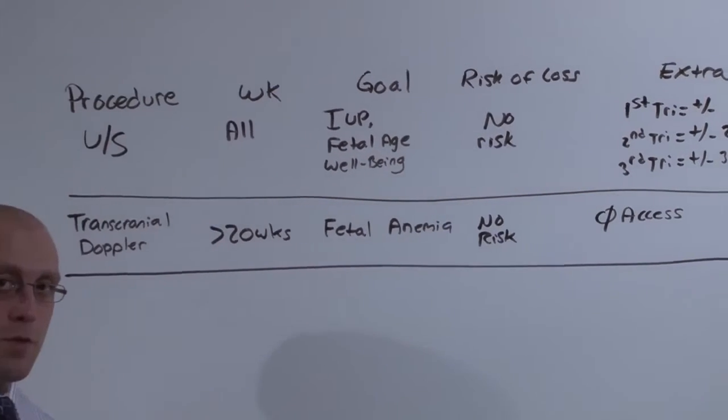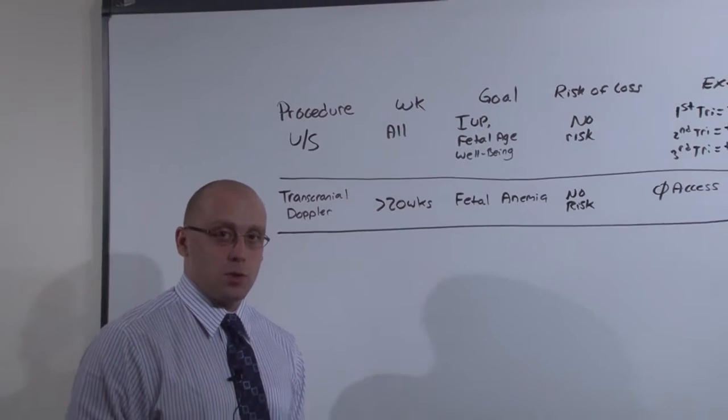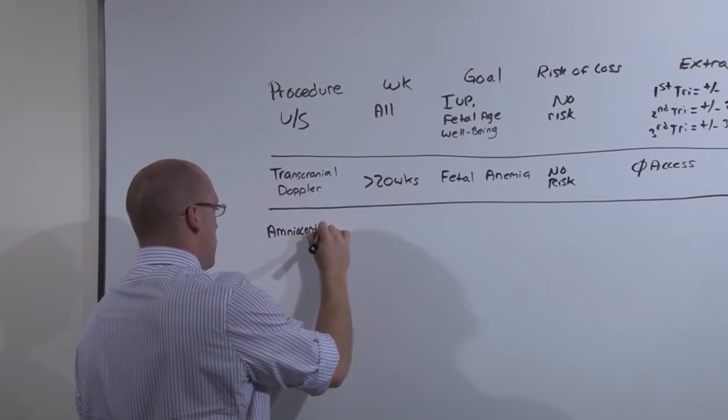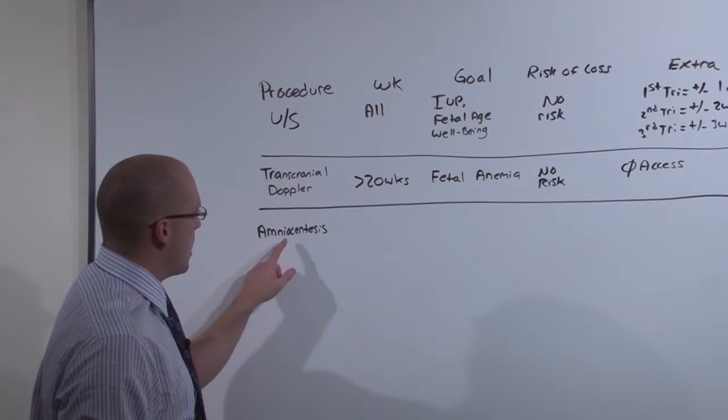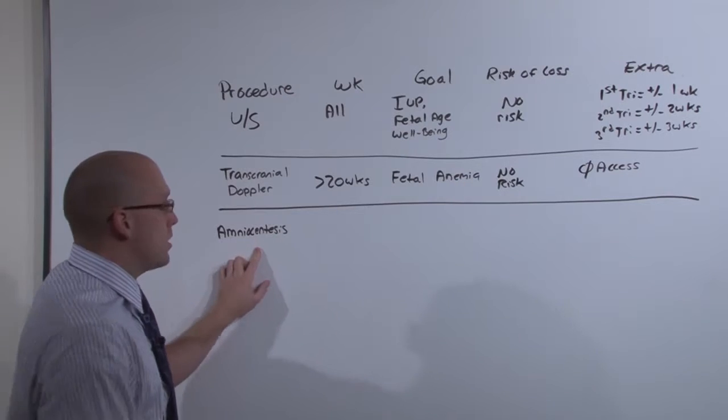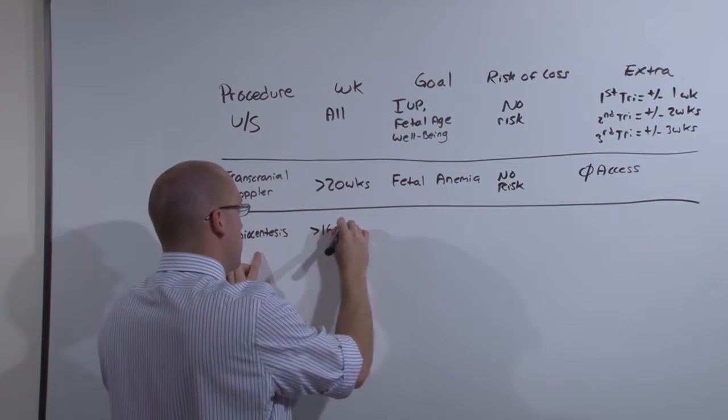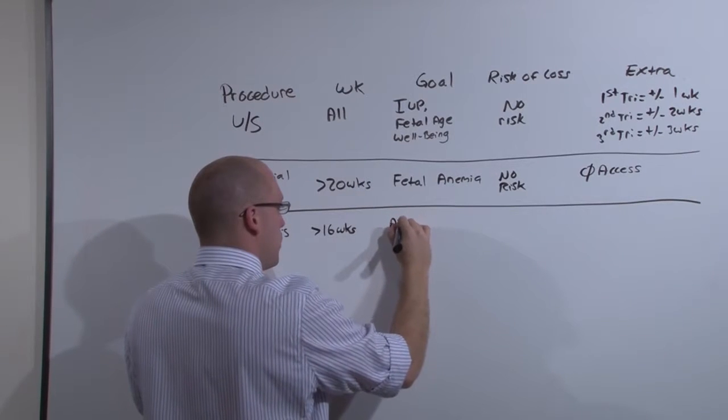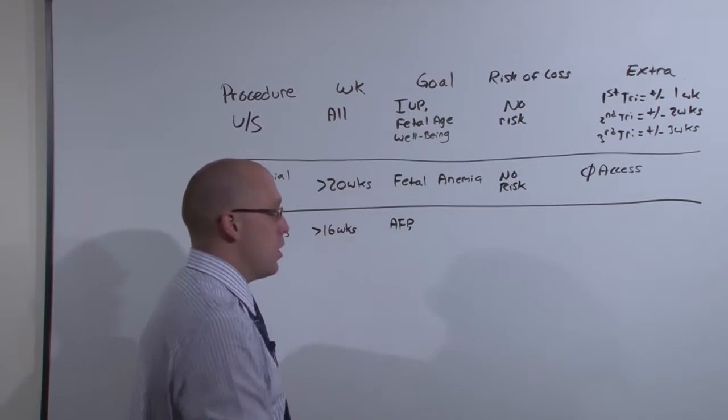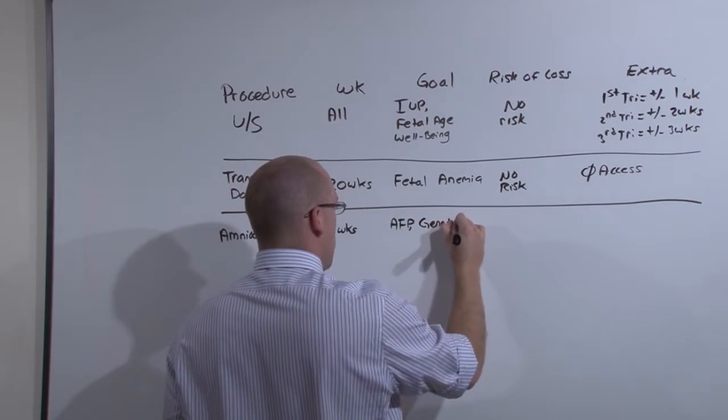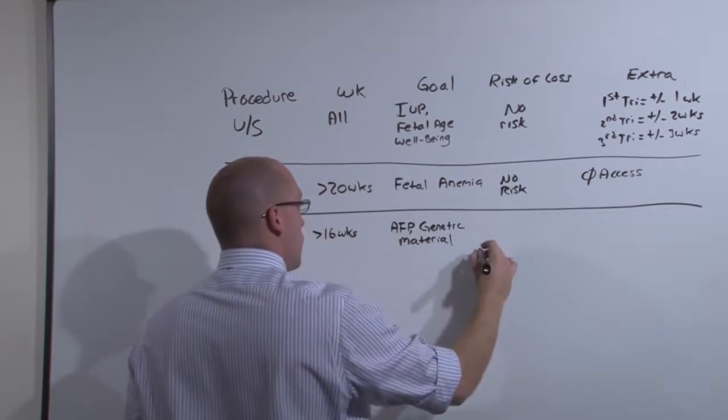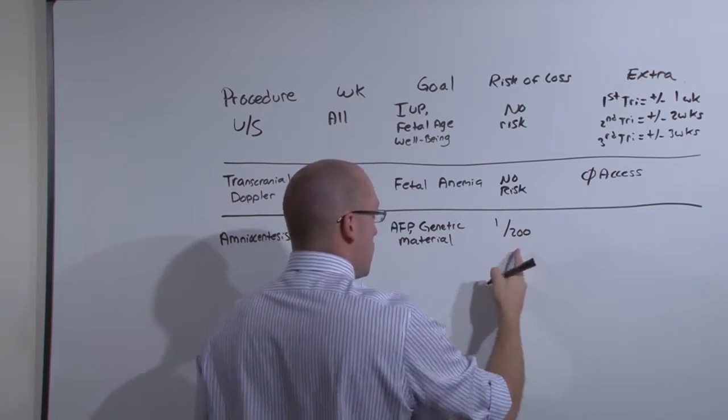Now the safest of these invasive procedures, and the next three are going to be the dangerous ones, is amniocentesis. You put a needle through mom and into the sac and draw out some of the amniotic fluid. It can only be done in the second trimester or later. And it's screened for alpha-fetoprotein because you're getting amniotic fluid. But because some of baby cells are in the amniotic fluid, you can get some genetic material. The risk of loss is approximately 1 in 200, a pretty significant risk.